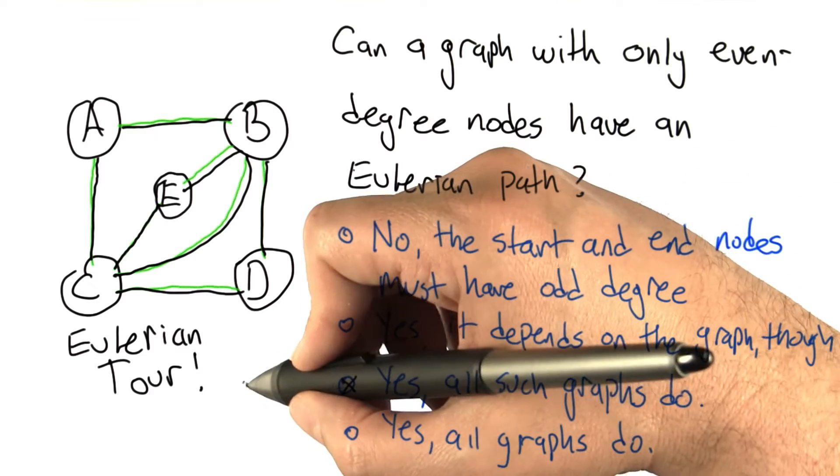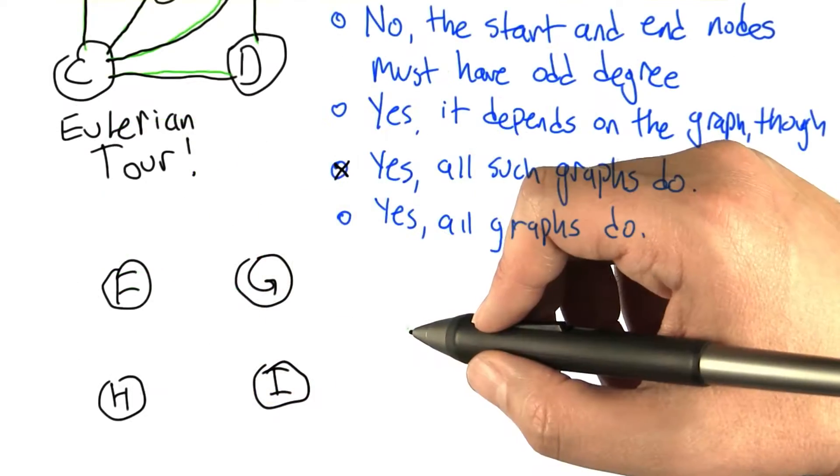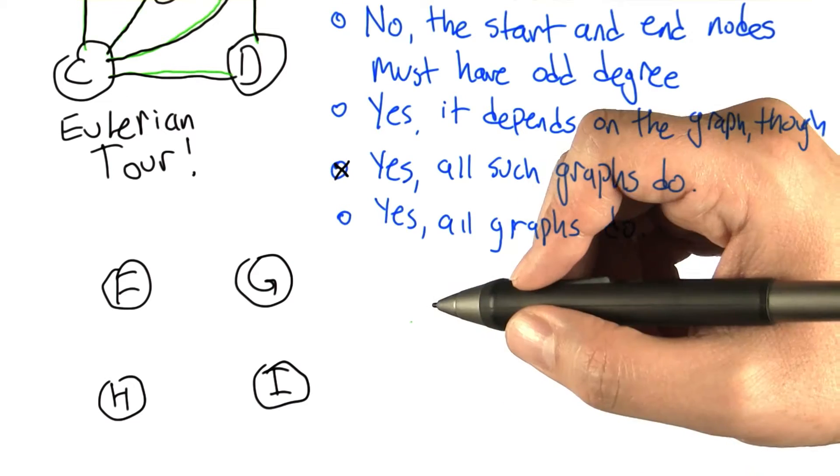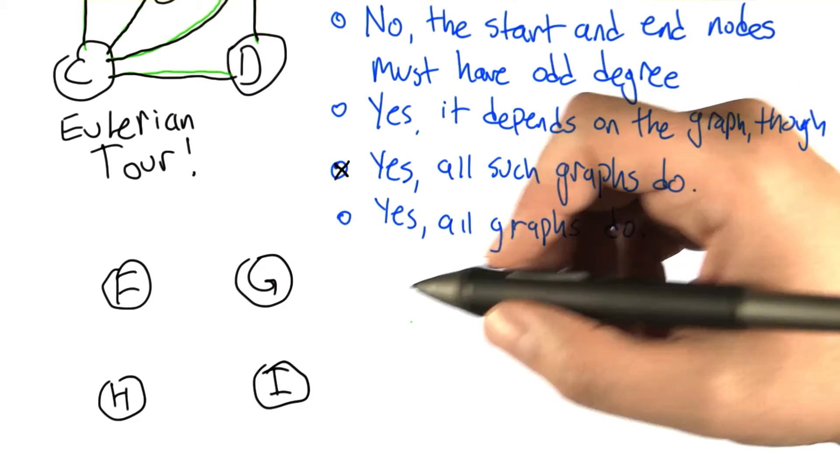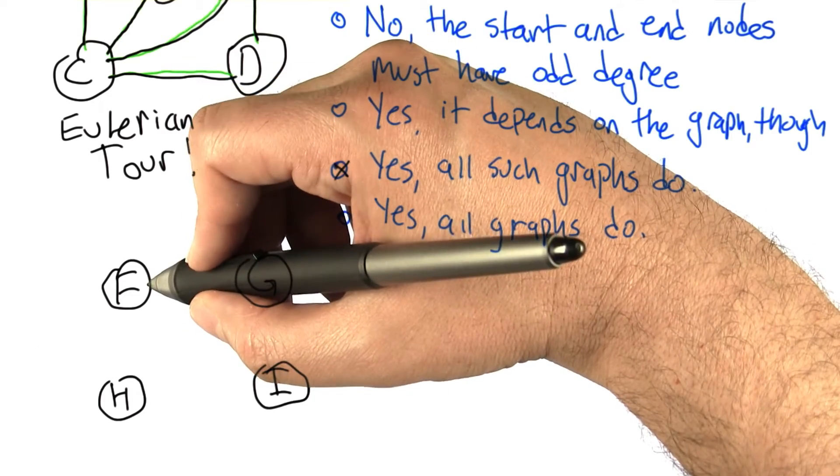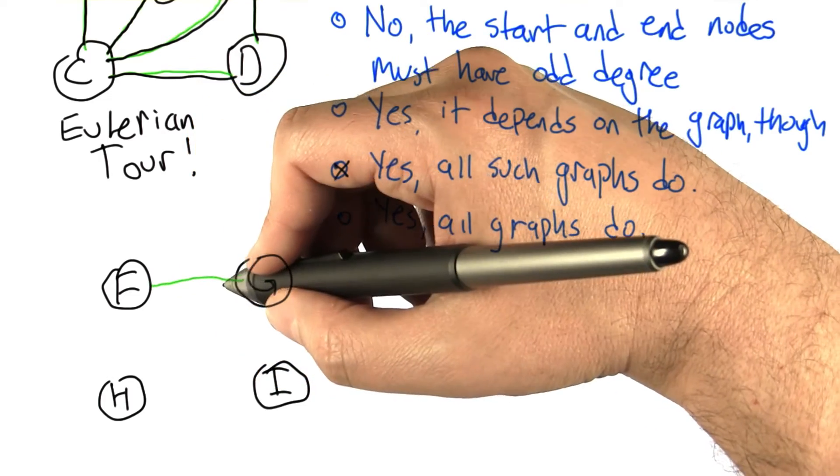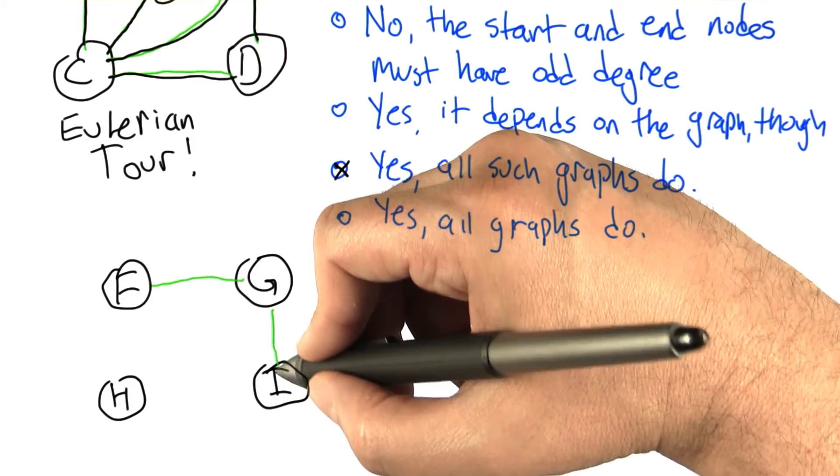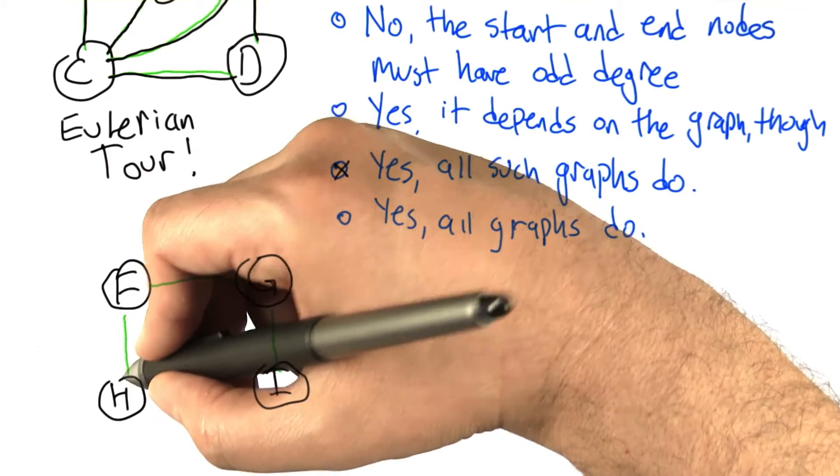Let's make a quick example graph just so that you can see it. So for this to work, we need to have a graph where more than two of the nodes has odd degree. So let's make one where four of the nodes have odd degree. So we can make these four nodes, F, G, H, and I.